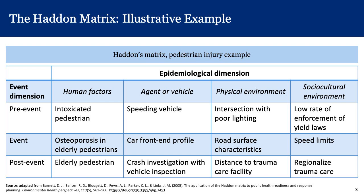Under the post-event row in the physical and environmental column, the distance to the nearest trauma care facility is critical. There's a term in emergency medicine called the golden hour, which refers to the time available to take life-saving measures in a traumatic injury. Under the sociocultural environmental column for post-event, regionalized trauma care — for example, systems in place to transport people by helicopter following an event — relates to policy or programmatic aspects of the jurisdiction.